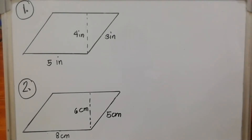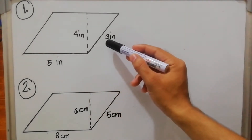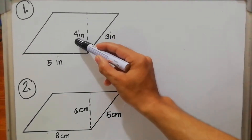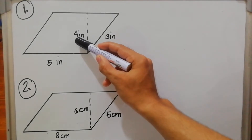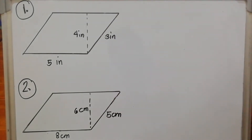Let us find the perimeter and area of the following. Example number one: we have five inches and three inches as the measurements of the sides, and four inches as the measurement of the height.